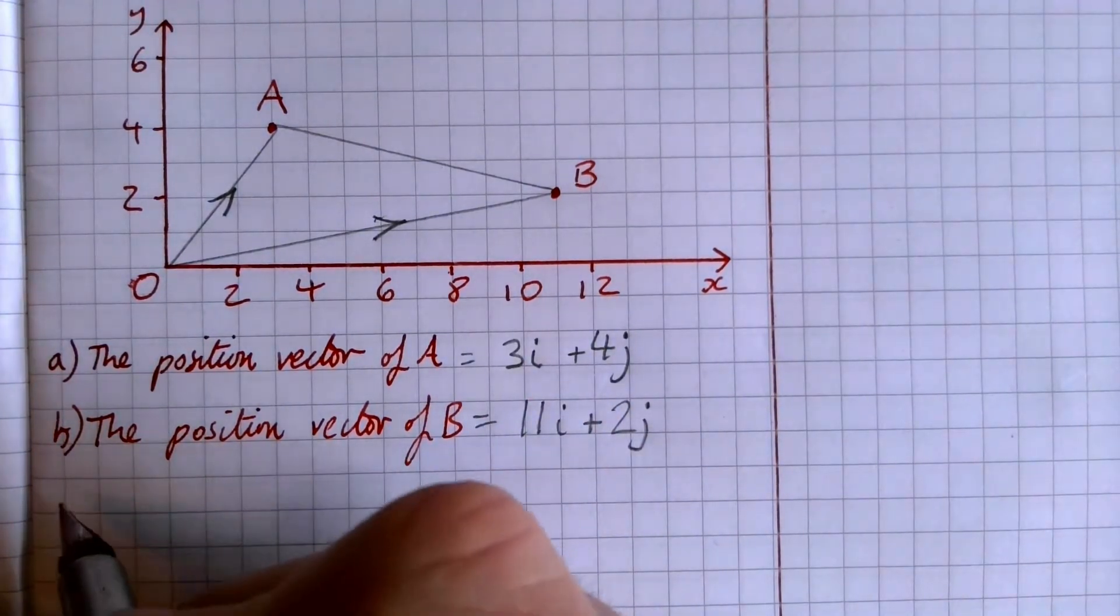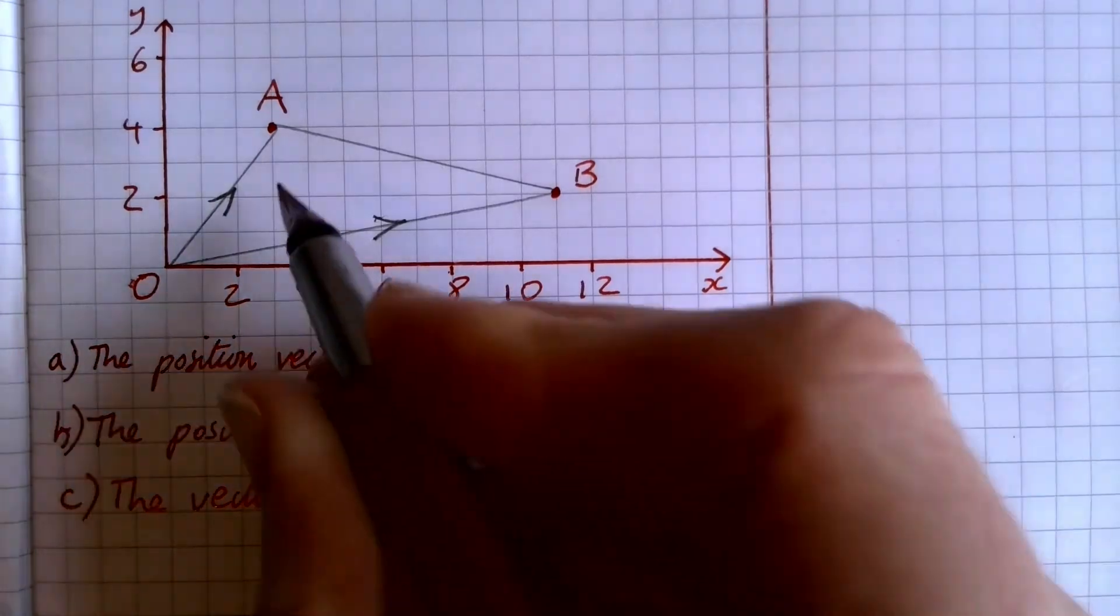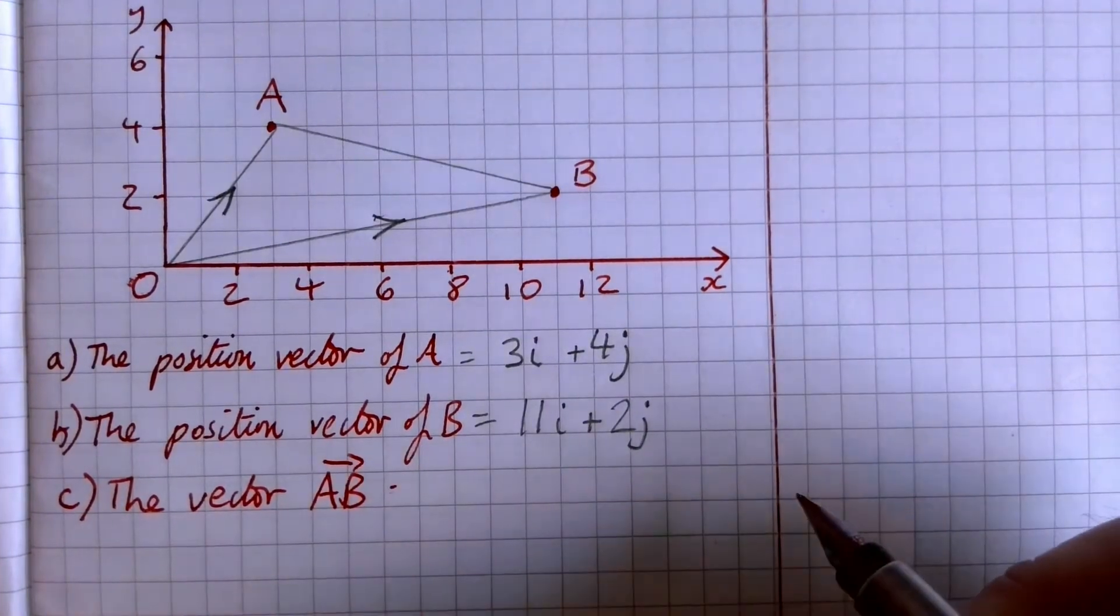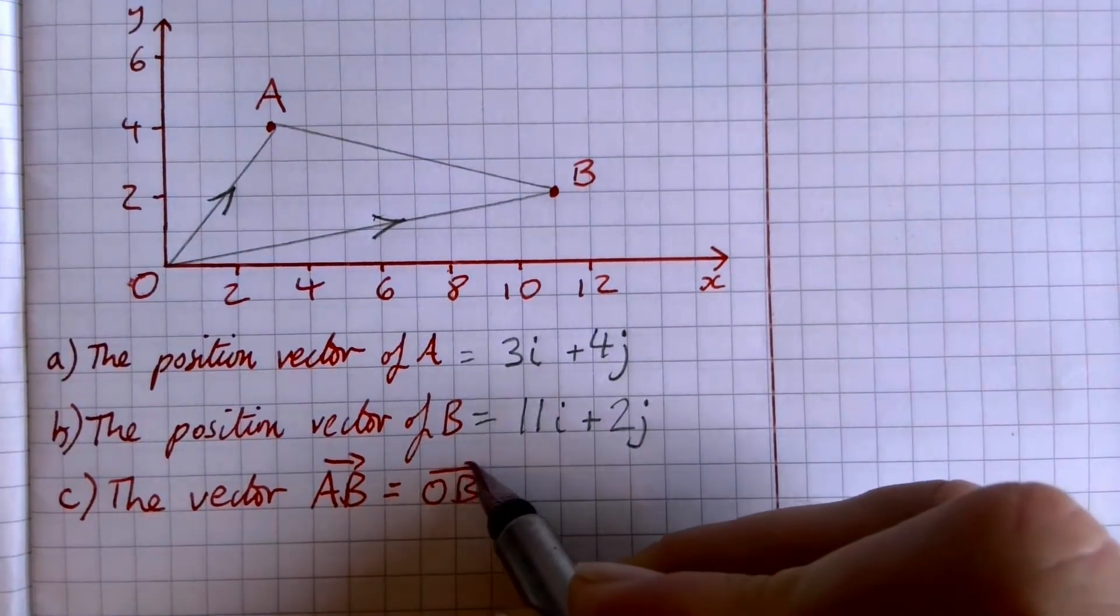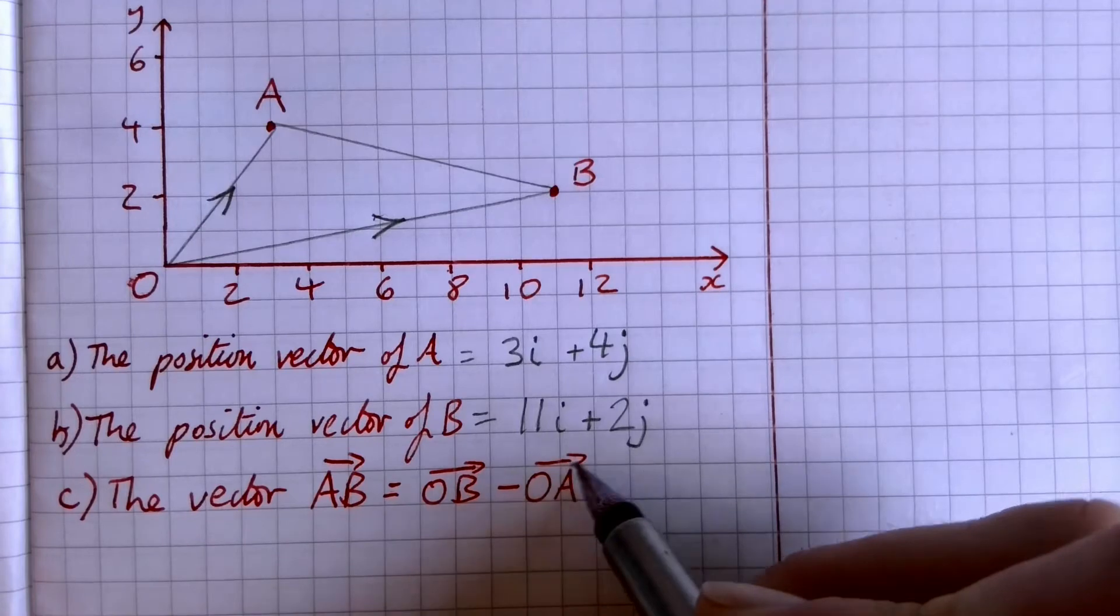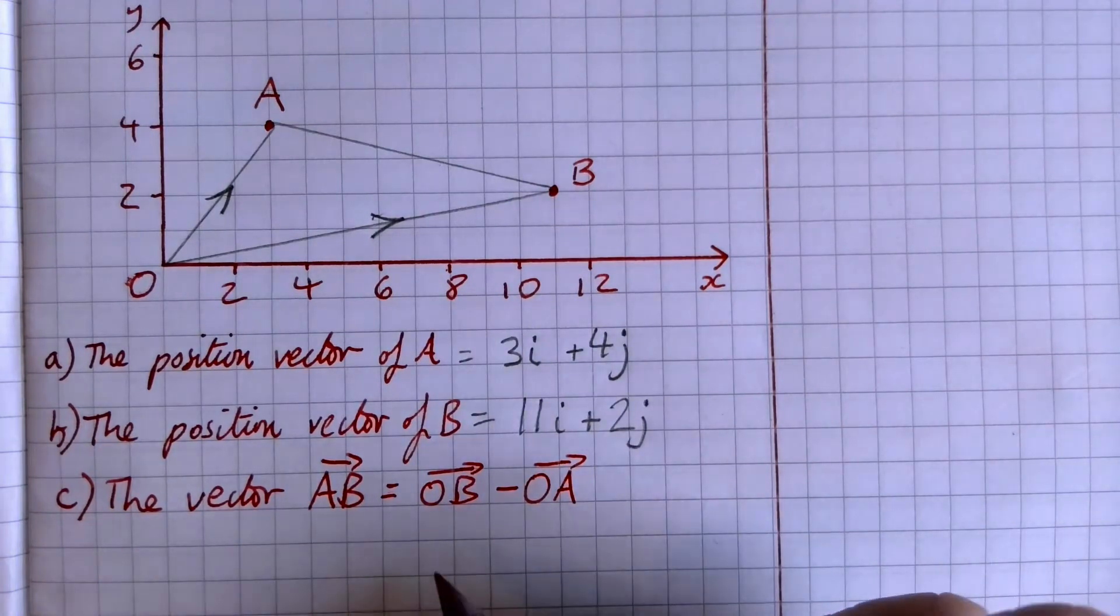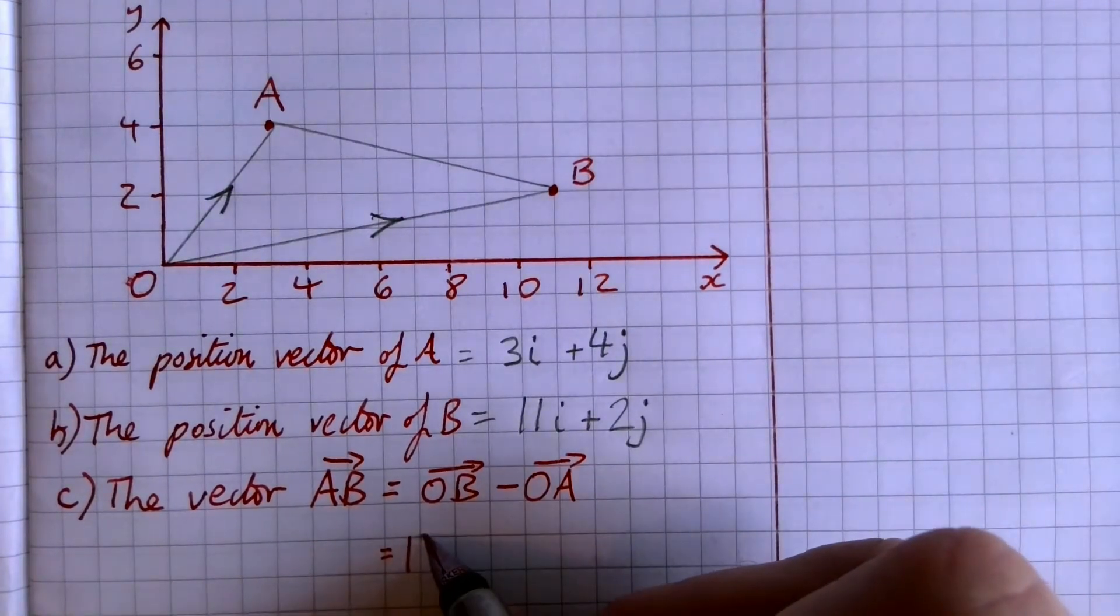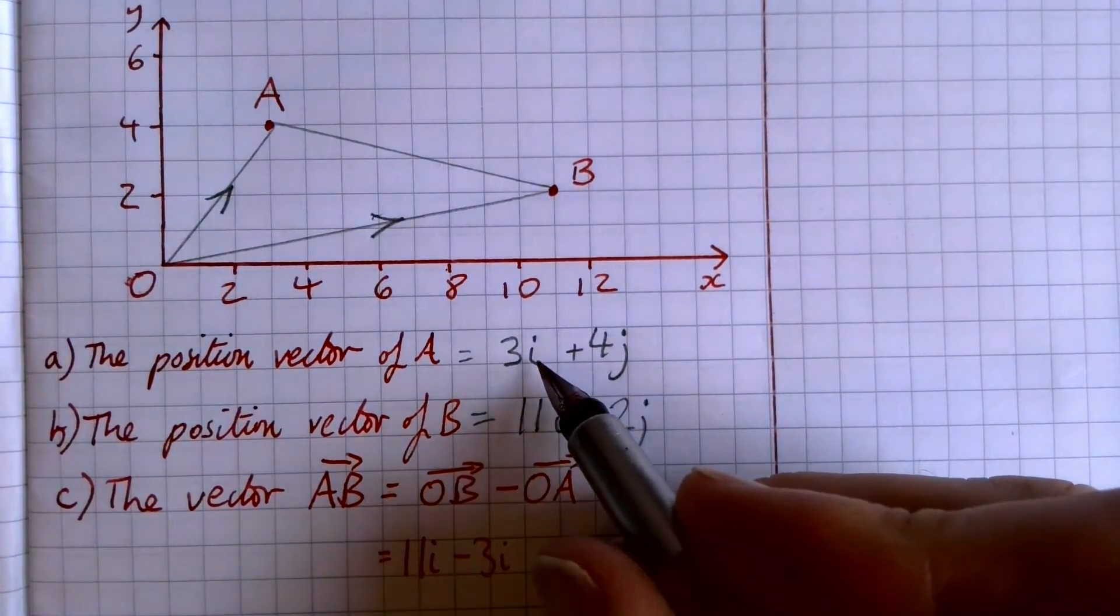And the question that's all been leading up towards is part C, the vector from A to B. Now, one way we could do this would be to use what I was just talking about and say that that is going to be OB, that vector, take that one. Or the other thing you could do is look at it in terms of the difference in here, which is effectively the same thing that we're talking about. So, to go from O to B is 11i, and then if we take the 3i, that is O to A.